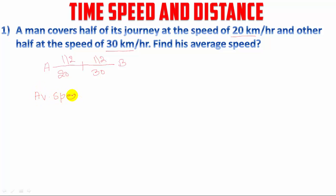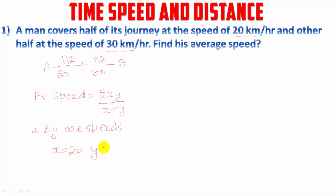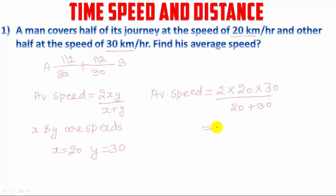Average speed is equal to 2xy divided by x plus y, where x and y are the speeds. According to the question, x is equal to 20 and y is equal to 30. So average speed will be 2 × 20 × 30 divided by 20 + 30, that is 1200 by 50, which gives us 24 km per hour.